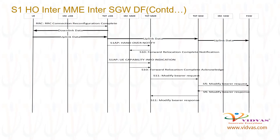Target ENB sends S1-AP Handover Notify to target MME. Target MME sends S10 Forward Relocation Complete Notification to source MME. Target ENB sends S1-AP UE Capability Info Indication to target MME. Source MME sends S10 Forward Relocation Complete Acknowledge to target MME. Target MME sends S11 Modify Bearer Request to target SGW with target ENB FTEID for downlink path.